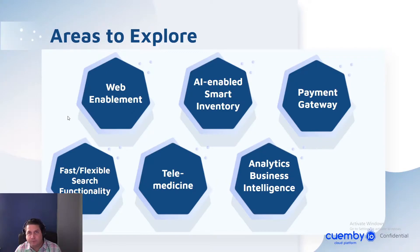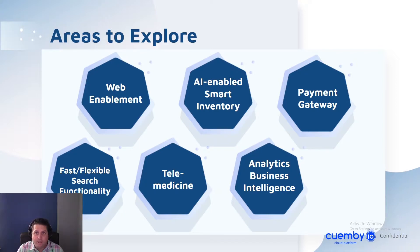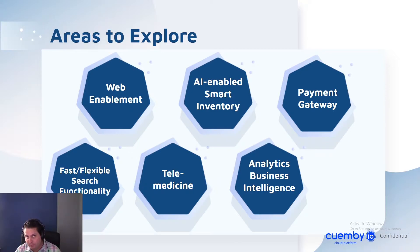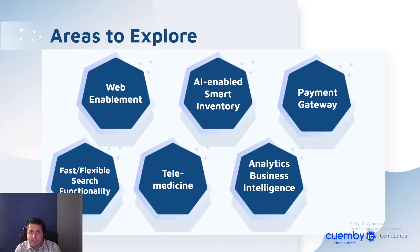The areas we like to explore with Covetris are related largely to some of the applications, but also the underlying infrastructure. For web enablement, we believe we can web enable Inframed, Avamark, and any other applications where you have not already made them a SaaS offering. For AI-enabled smart inventory, we can utilize artificial intelligence to help with pharmaceutical ordering or other supplies based on the information in the PIMS.